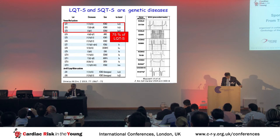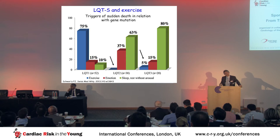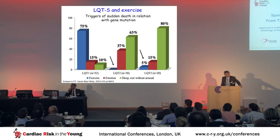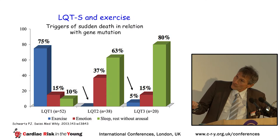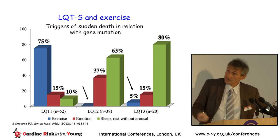Why are we interested in QT duration and sports? Because exercise can be a trigger for sudden death in relation to gene mutations. In long QT 1, most sudden deaths and syncope occur during intense exercise. However, in long QT 2 or long QT 3, the trigger is mostly emotion or sleep.